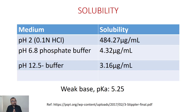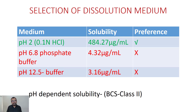Because of the poor solubility, using dissolution mediums outside the GI tract pH range is justifiable when handling poorly soluble drug substances. For water-soluble drugs with good solubility, you restrict yourself within the GI tract pH range of 1.2 to 6.8. For poor solubility drugs, pH outside that range can also be used. The choice of dissolution medium here is 0.1N hydrochloric acid.